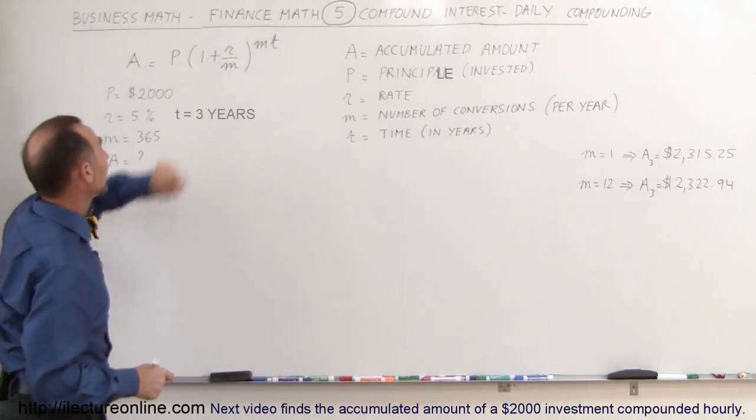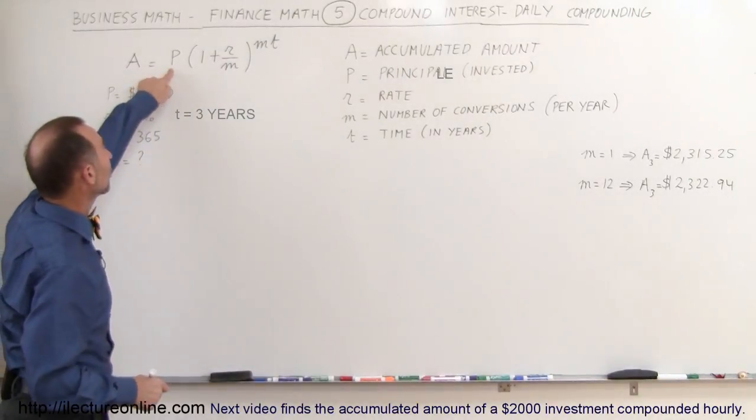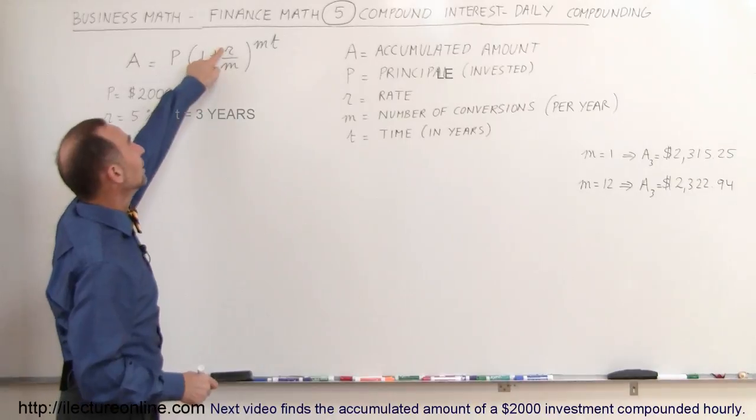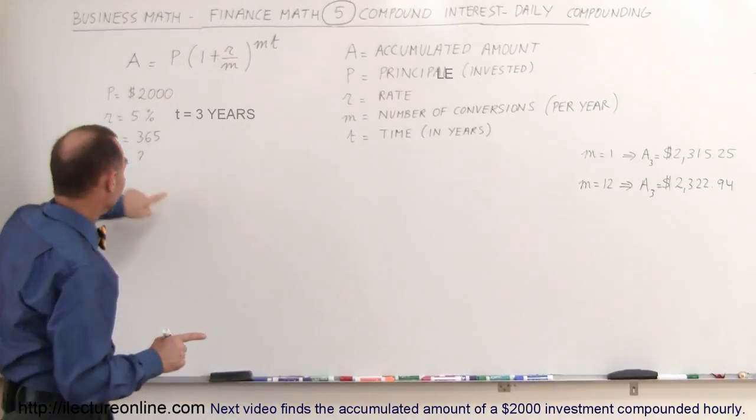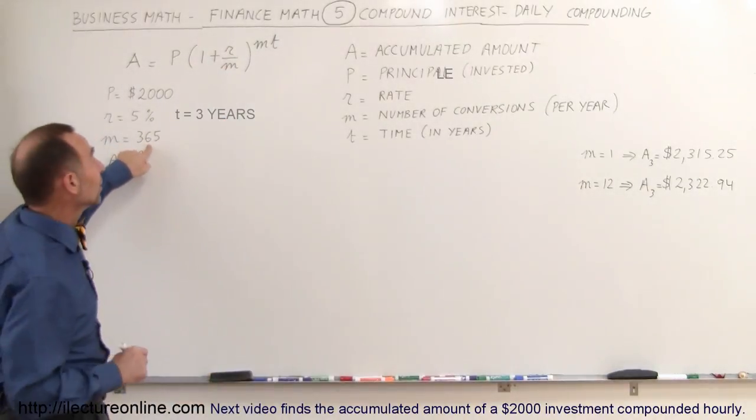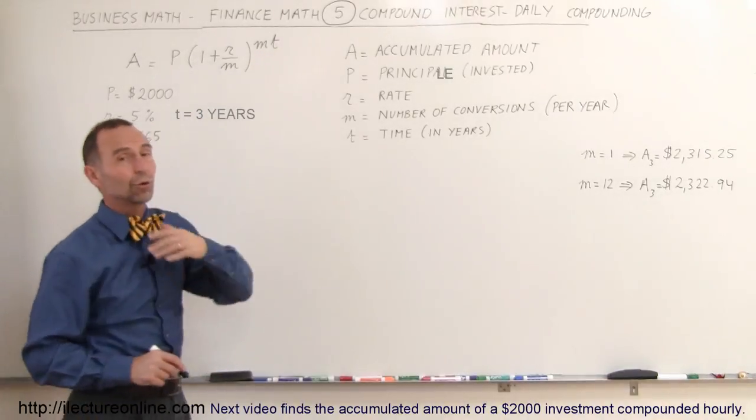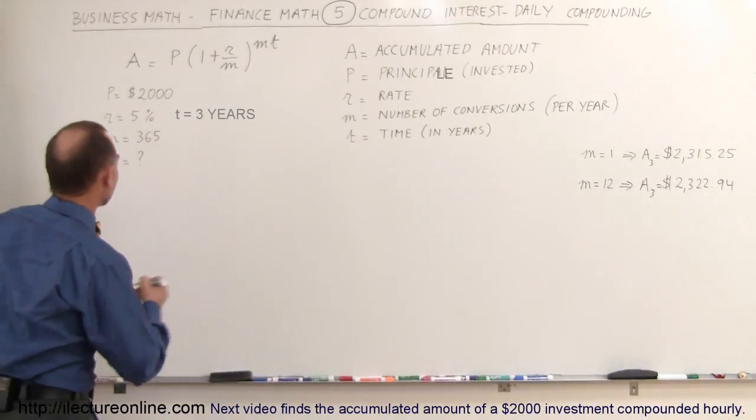Here's the equation for compound interest. The amount earned equals the principal times the quantity one plus the rate divided by the number of conversions, raised to m times t. Daily means m is equal to 365. T is of course the number of years the money is invested.